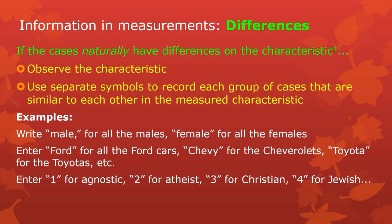You could be clever and use numbers to encode something that isn't really numeric. So for a person's religious affiliation, you enter 1 for agnostics, 2 for atheists, 3 for Christians, 4 for Jewish. That's perfectly valid. In older systems of software, you had to use numbers all the time — it was a limitation of computers. That's no longer the case; every system worth its salt can handle words now.